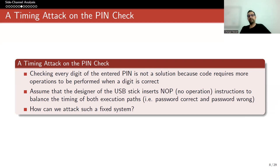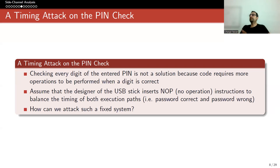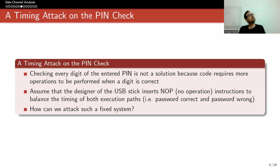Let's go back to our example. We fixed the last 7 digits and tried every 10 possible first digits. In the previous example, it took longer for the correct PIN. Now it takes almost the same, so I cannot attack with timing. Can I do better — can I do an attack that breaks this new version?